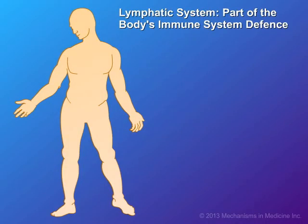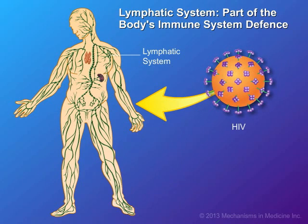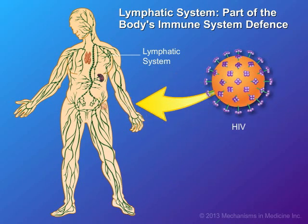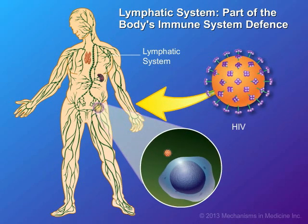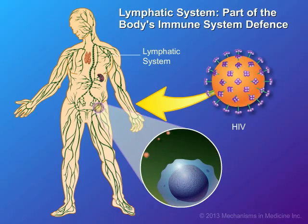The lymphatic system extends throughout the body and is part of the body's immune system defense against infection. When HIV enters the body, it establishes itself in the lymphoid tissue. Circulating CD4 cells are targeted and infected by the HIV virus lying in wait, and the CD4 cell count in the body decreases as infected cells are destroyed.